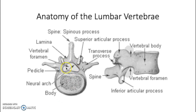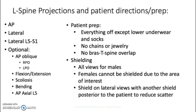The standard projections are the AP, the lateral, and the lateral L5-S1 spot view. Optionally you'll do AP oblique views — RPO and LPO. Sometimes you'll do flexion and extension. There are extra views with the scoliosis series, bending views side to side laterally, and an AP axial at L5 that shows the L5-S1 junction a little better.